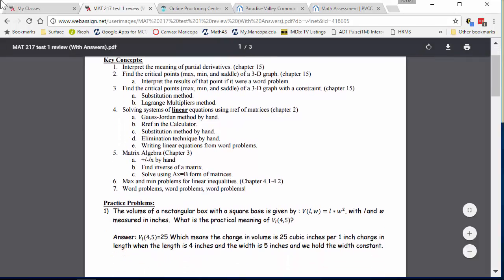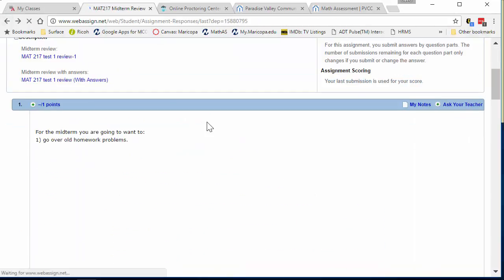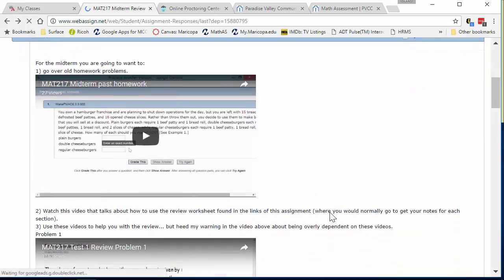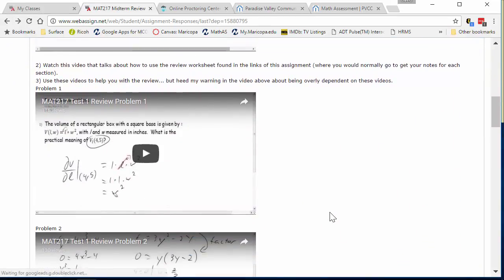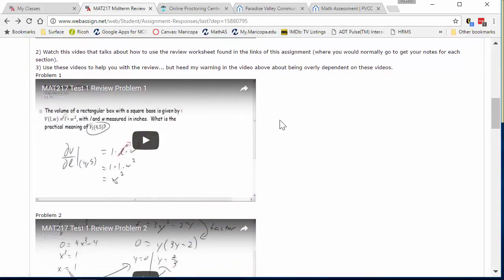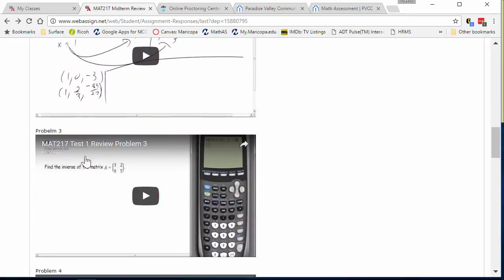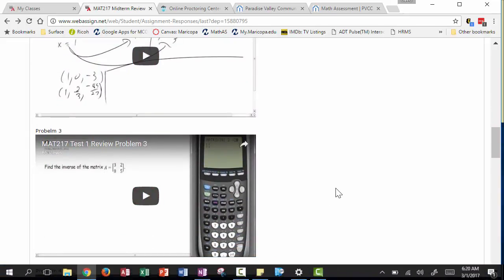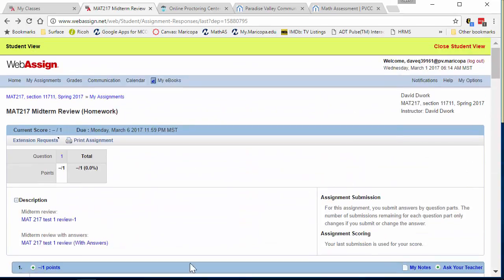Now the other document here is the exact same document, just with the answers typed in. So you'll see I have the answers typed in. But again, if you need more than that, as you scroll down through this assignment, you will see: problem one, here's the solution; problem two, here's the solution; problem three, here's the solution. Get the idea?